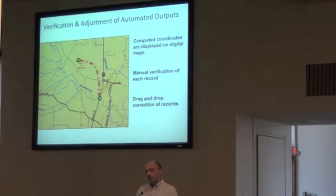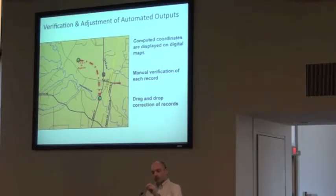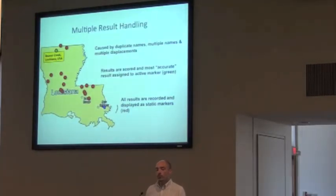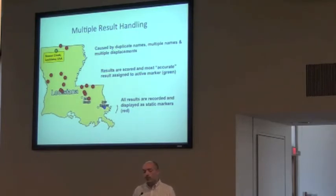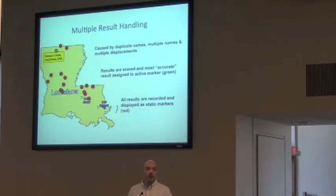One aspect of Geolocate is producing coordinates, but the other aspect is this user environment where you take a point and drag it on the map and create some kind of uncertainty around it, so it lets you look at the results and make adjustments as necessary. One of the problems with automatic georeferencing is that often you'll get a lot of results. If you have ambiguous names or multiple displacements within a locality — maybe not having a county — your search area increases so much that you find a lot of duplicate places. So Geolocate has a built-in scoring algorithm that scores and ranks each result, giving the highest-scoring one an active marker that you can drag and work with, while you can evaluate the other results as needed.